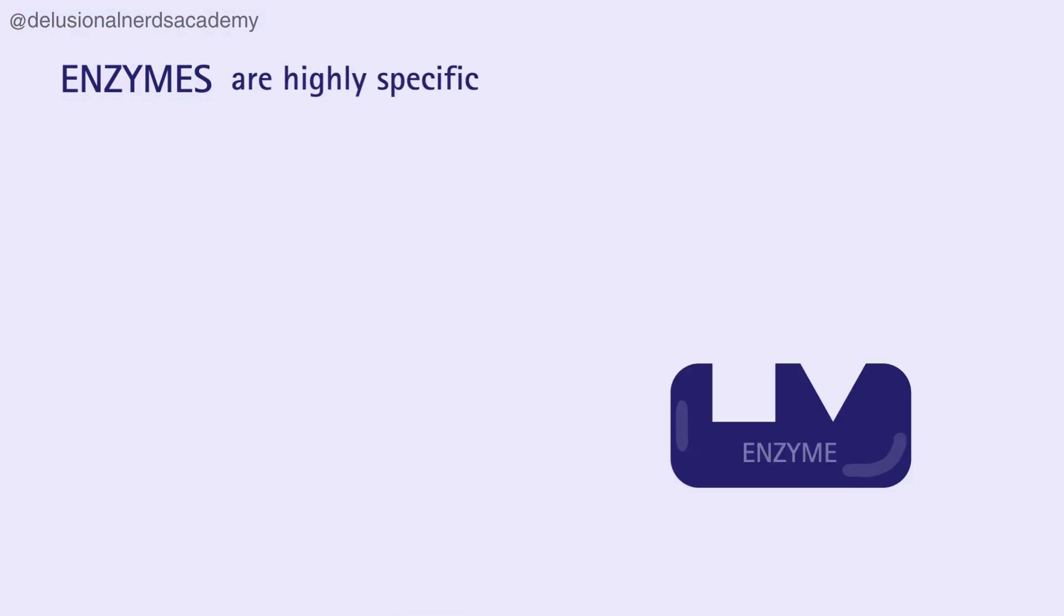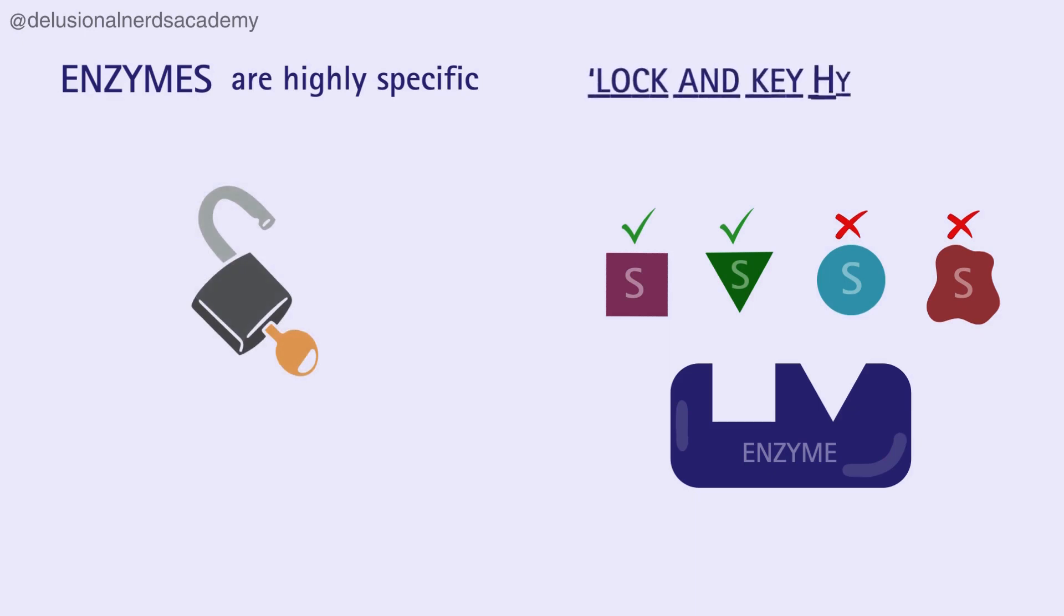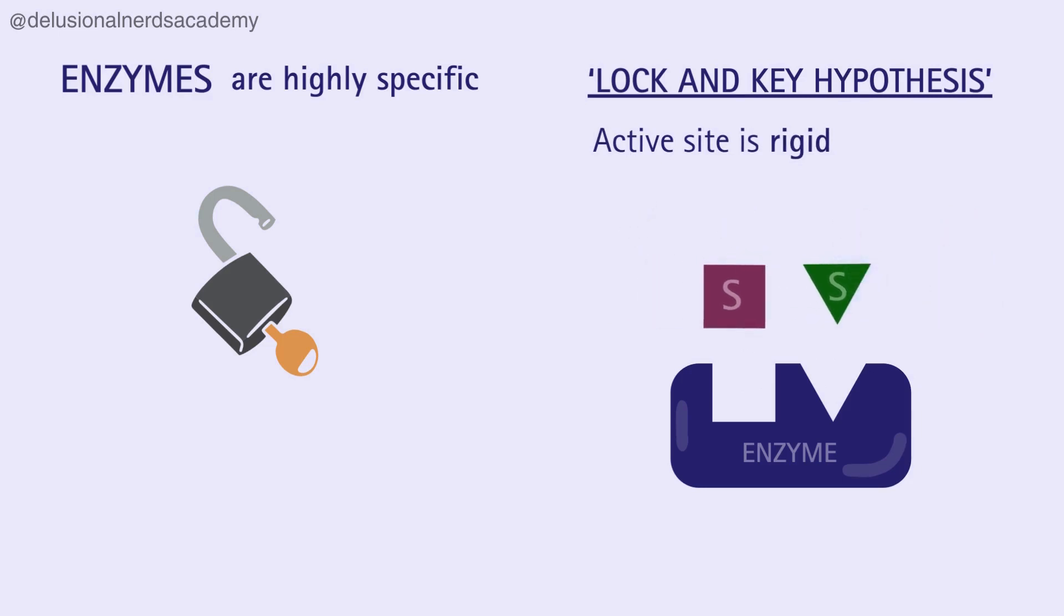Enzymes are highly specific. Their active sites recognize and bind with the substrate that complements their shape perfectly, just like how a key fits into a particular lock. This model of enzyme action is known as the lock and key hypothesis, which states that the active site of the enzyme is rigid and it only allows a specific kind of substrate to fit into it.